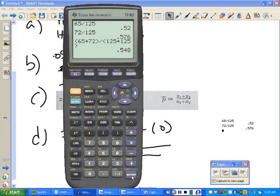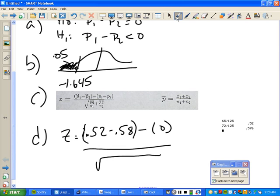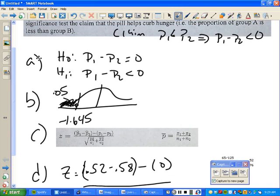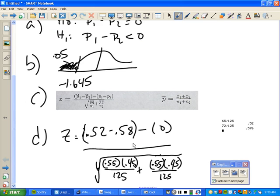Divide it by. Now, what's P bar? P bar is X1 plus X2 divided by N1 plus N2, right? So, it is 65 and 72. 65 plus 72 divided by 125 plus 125. 0.548. So, we'll just say 0.55. Or, in today's case, 1. Okay. So, we're going to go 0.55 times 0.45 over 125 plus 0.55 times 0.45 over 125. How come that was 0 on that other side again? It's P1 minus P2. And P1 minus P2 is assumed to be 0 because of the null hypothesis.